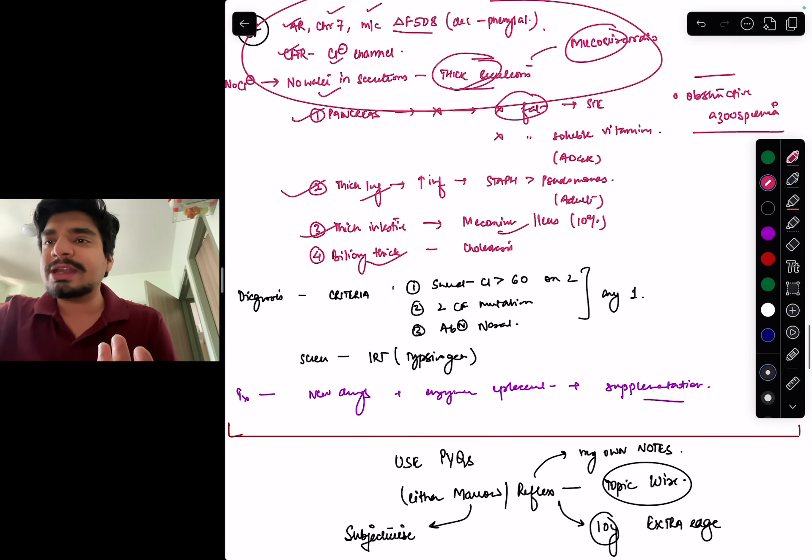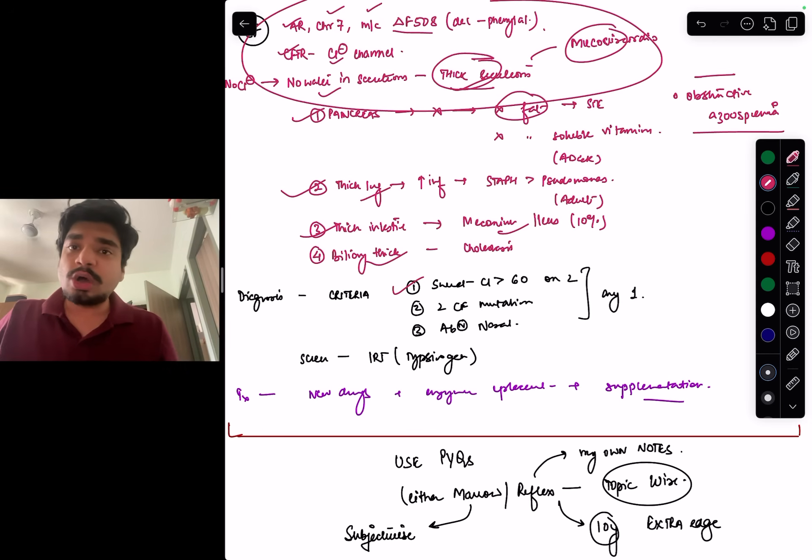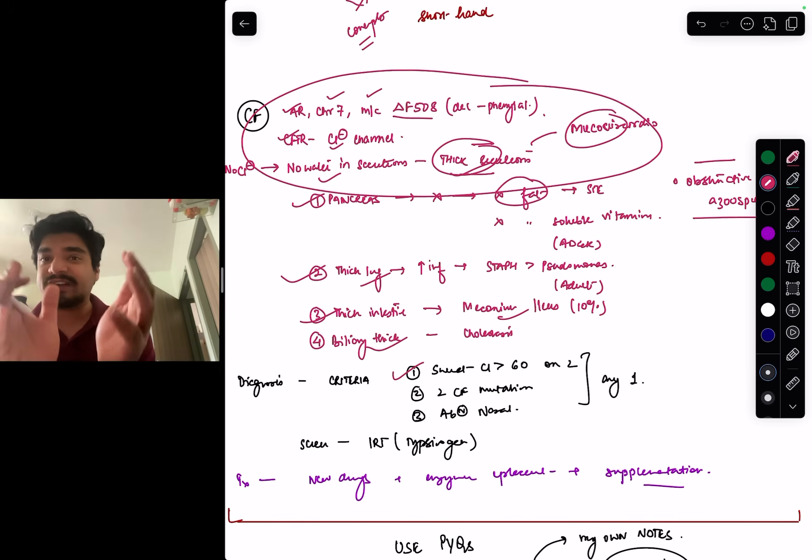And after this, this thick secretions, what will they cause? In pancreas, they will cause infection in the lungs. They will cause meconium ileus. They will cause cholestasis. Pancreas, if it's not there, there will be no fat. So, I've not written no fat absorption leading to steatorrhea. I've not written that. I've written simply cross fat, steatorrhea, no water soluble vitamins, bracket ADEK. I've not written vitamin ADEK deficiency will be seen. That's how you make concise notes. You have retained all the information, but written it in a shorthand format, removed the explanation and converted that three pager into half pager.